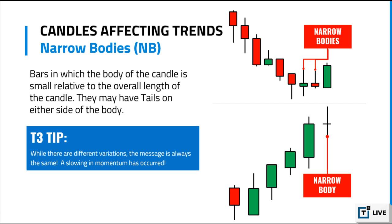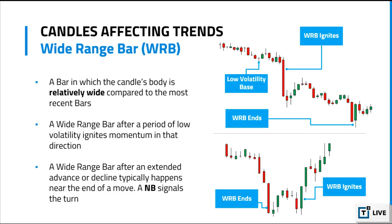Narrow range bars and narrow bodies: bars in which the body of the candle is small relative to the overall length of the candle. They may have tails on either side of the body. While there are different variations, the message is always the same — a slowing in momentum has occurred. Stick with me for a few more minutes and we'll talk about this in more detail.